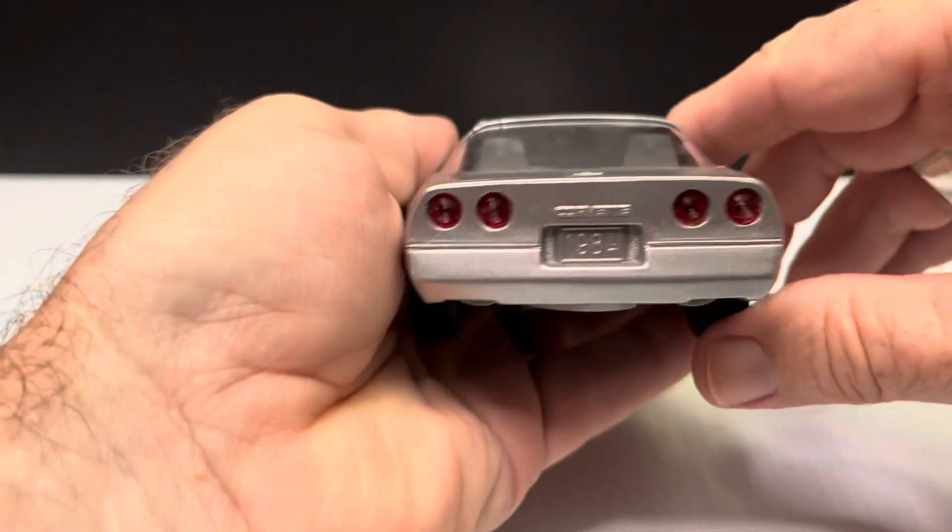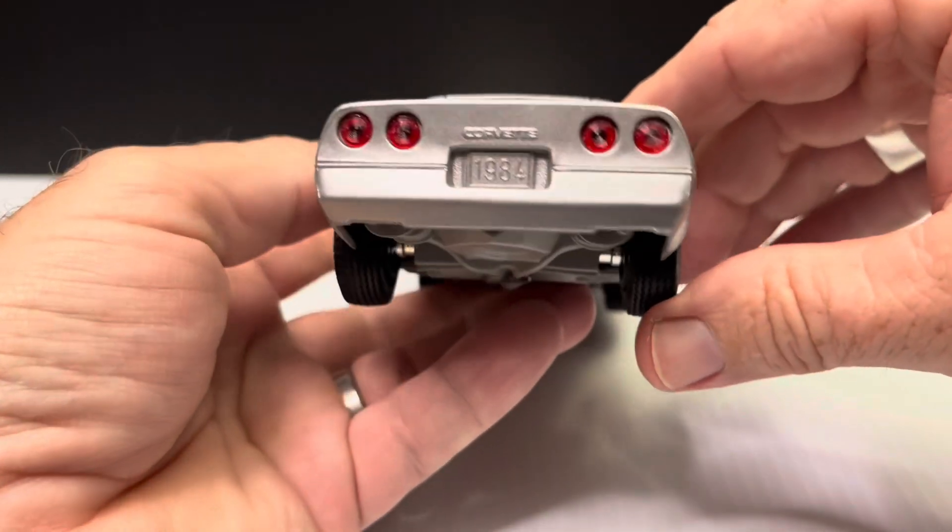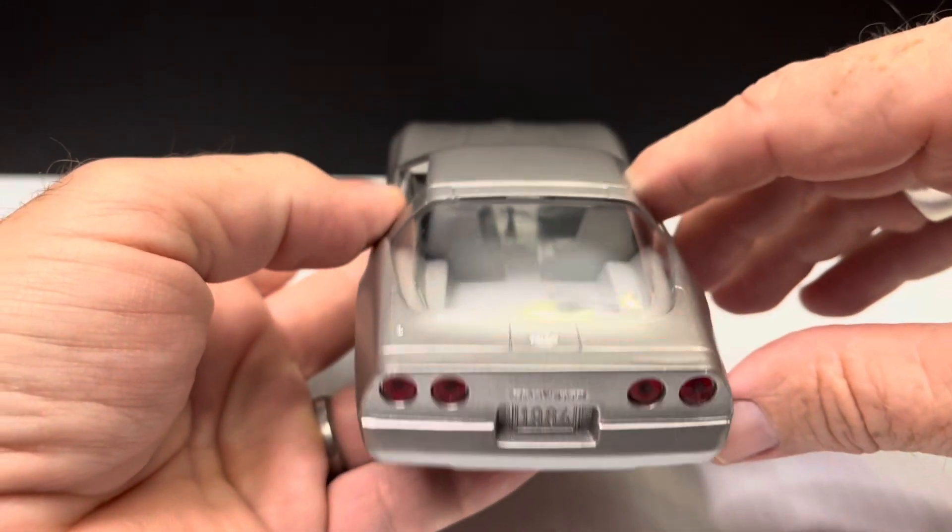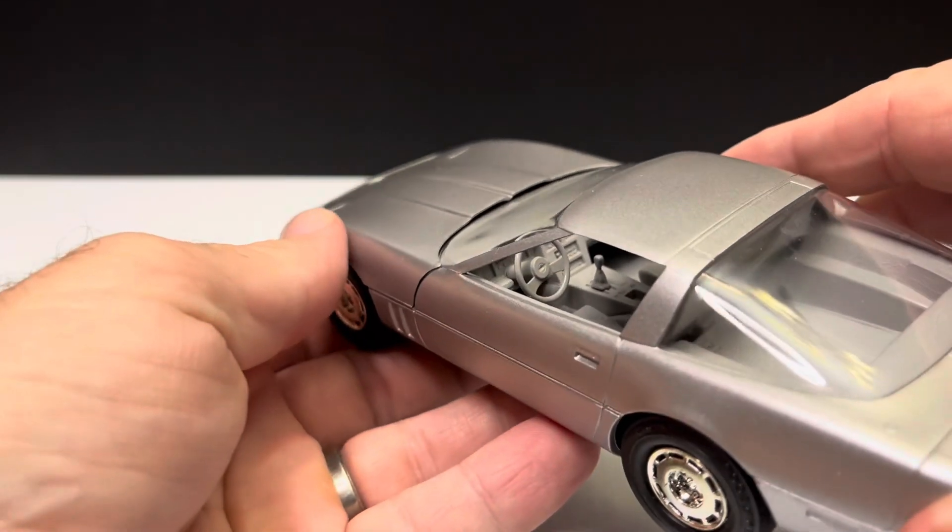Screw bottom, so it shouldn't be too bad to take apart. 1984 embossed in the rear license plate.